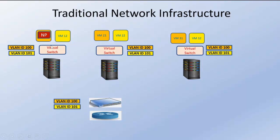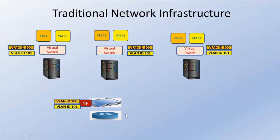In the absence of network virtualization, how does this network packet move from VM1 to VM12? First, this network packet has to come out of the virtual machine and go to the physical network of the server on which it is deployed. From the server it goes to the switch, and in that switch I have to configure VLAN ID 100 and 101 — otherwise the switch will not know to which virtual machine to forward the packet.